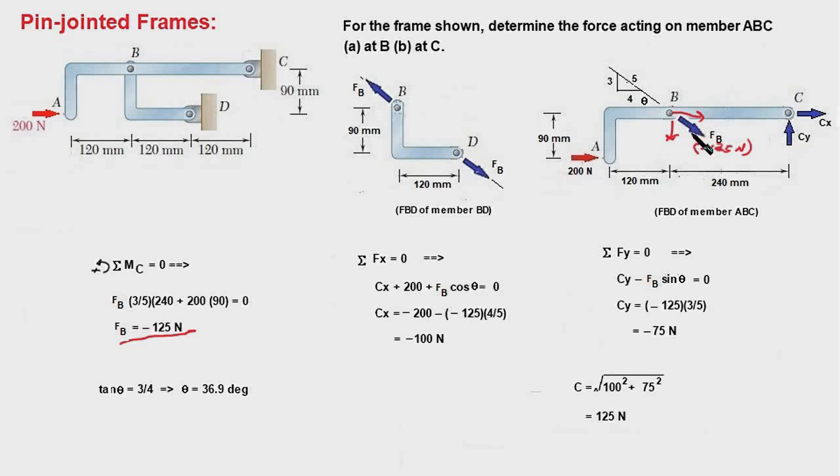So you notice here that FB cos theta I have taken a positive value, and when I plug in the value of FB, I have taken minus 125 N. So do not ever make a mistake of changing the direction of these forces whenever you get a result which is negative. Let the direction be shown as it is, and the value could be written in terms of minus some numerical value. So this gives Cx is minus 100 N. And next, Sigma Fy equal to 0 will give Cy minus vertical component FB sin theta equal to 0. And when we plug in the value of FB, we will plug in minus 125. And this equation will yield Cy as minus 75 N.